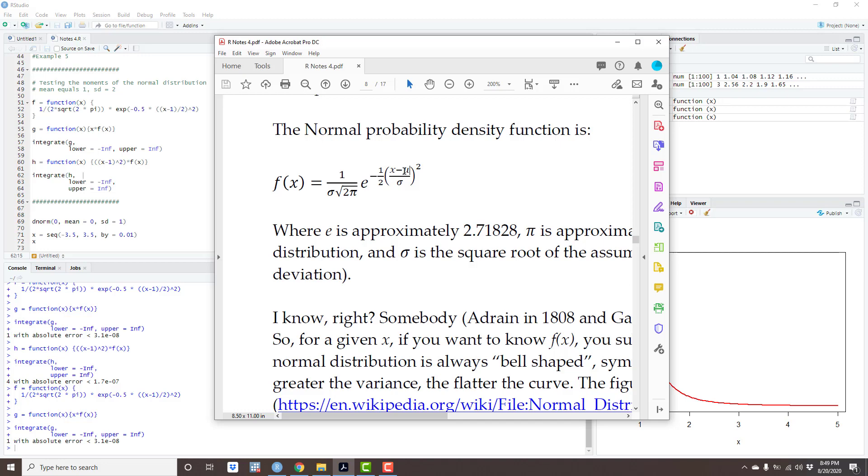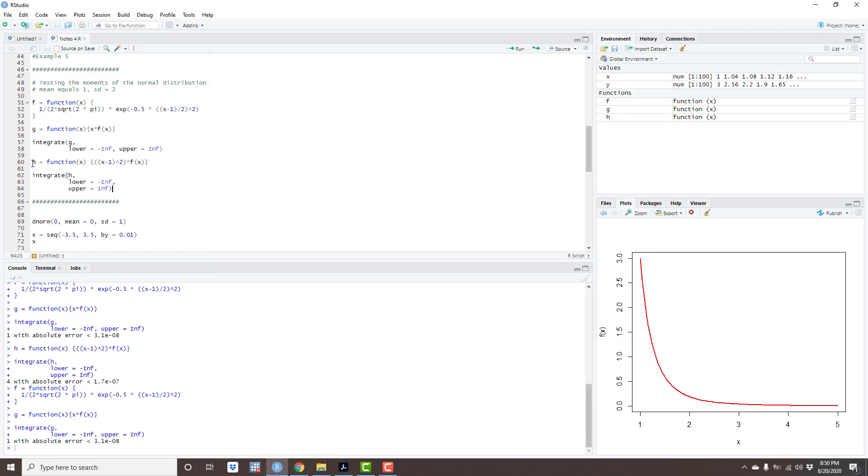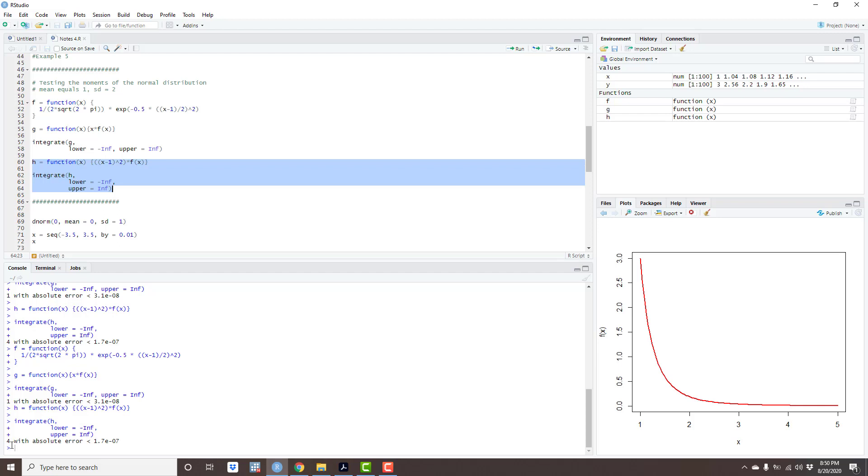Now let's try the variance. To calculate the variance, I do not have to integrate f of x, but I have to integrate this alternative function here, which is x minus mu, x minus 1, square times f of x. So let's do that, integrate this function. Again, x is varying from minus infinity to plus infinity, and let's see what I get. I got 4, which is what I expected, because I chose the standard deviation to be 2, and the variance is therefore 4.